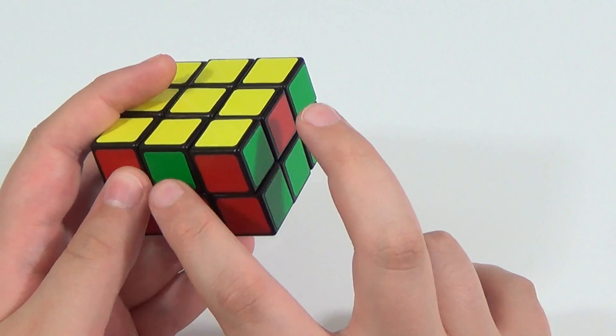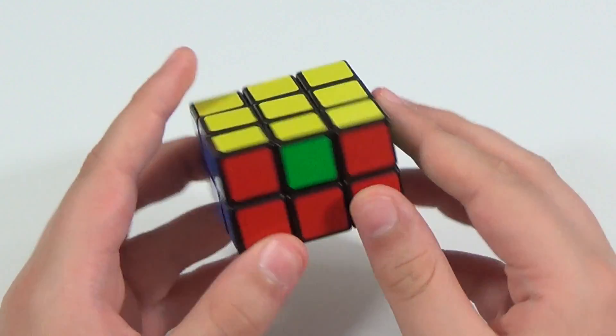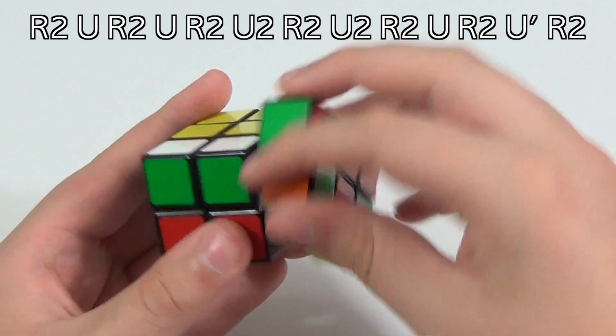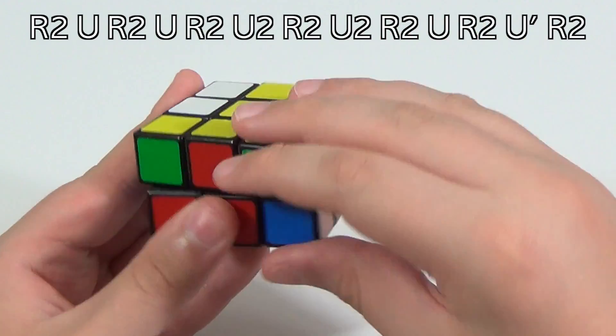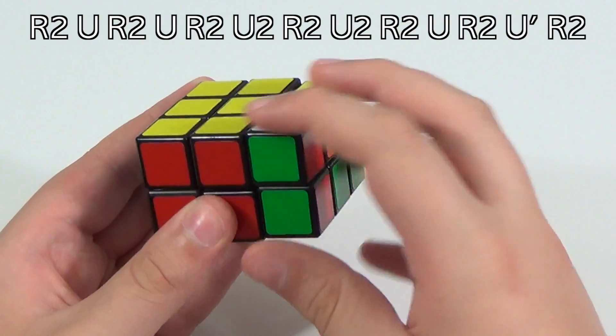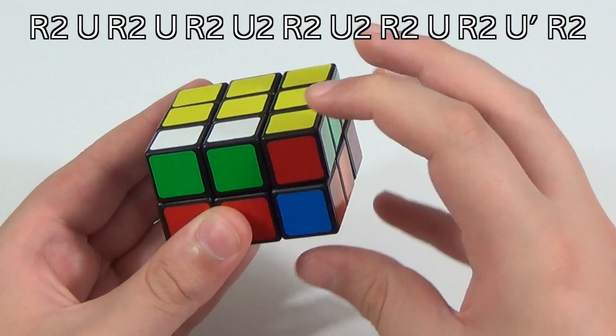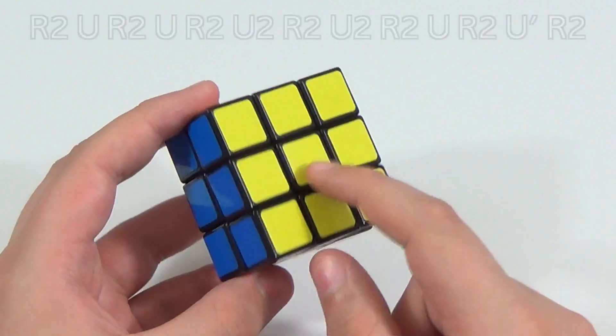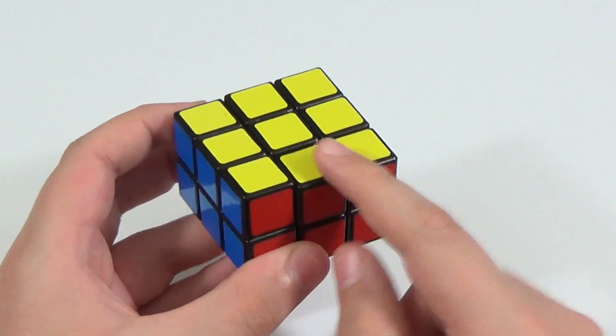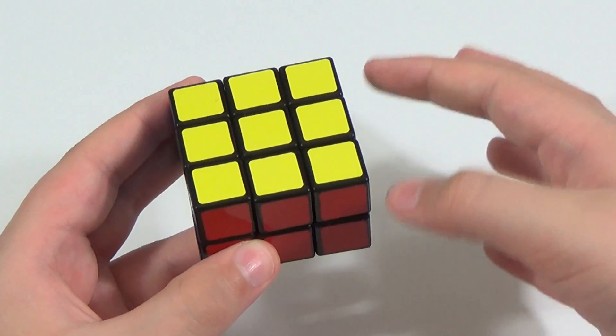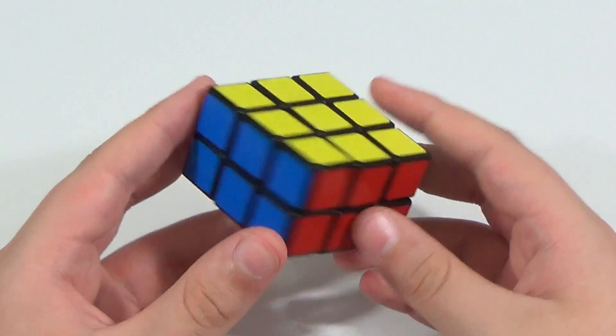And now we're just left with an adjacent edge swap. And this is the algorithm to do it: r2, u, r2, u, r2, u2, r2, u2, r2, u, r2, u prime, r2. So not the shortest of algorithms, but this one is probably the most important algorithms you will need to learn for solving cuboids along with the corner swap algorithm. And that's it. The cube is solved.